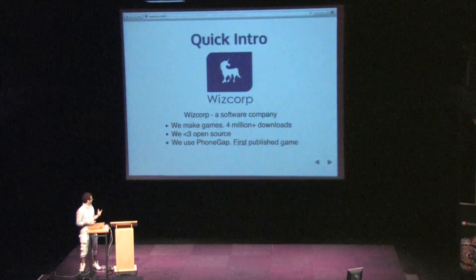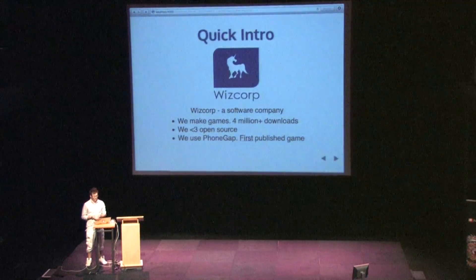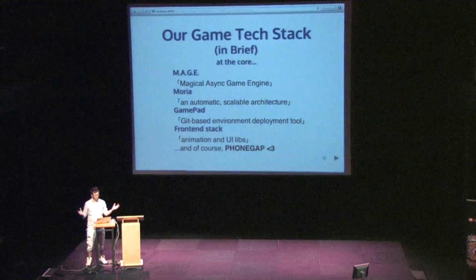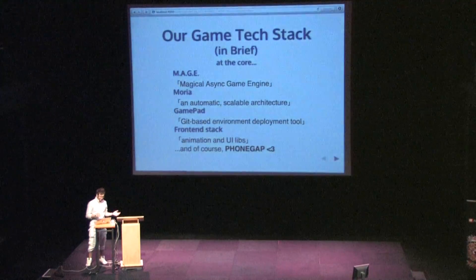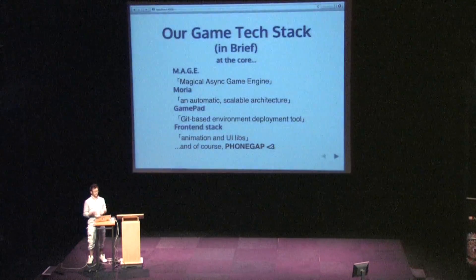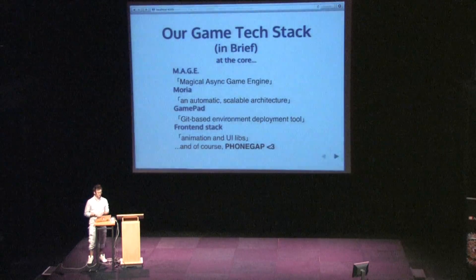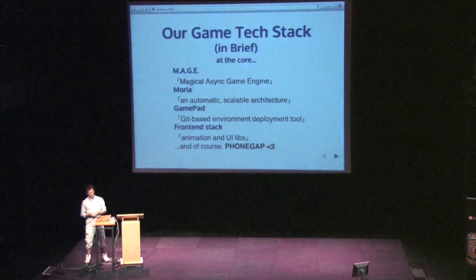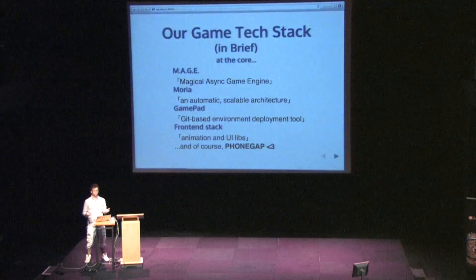We're actually the first published PhoneGap game, way back. Let me give you a background to the full scope of the tech we have in our game. We have a game engine built in Node.js called Mage — it stands for Magical Async Game Engine. We have a system architecture and server called Moria, which is basically an automatic scalable architecture.